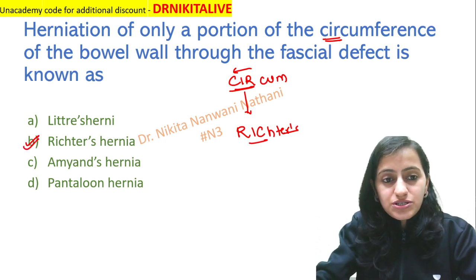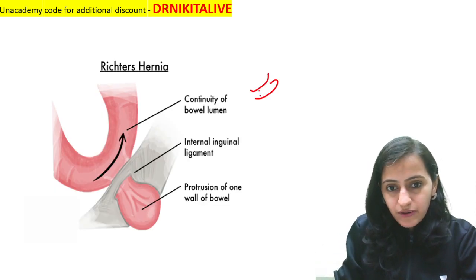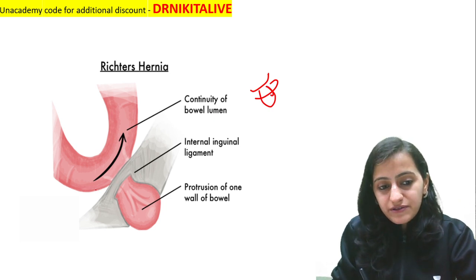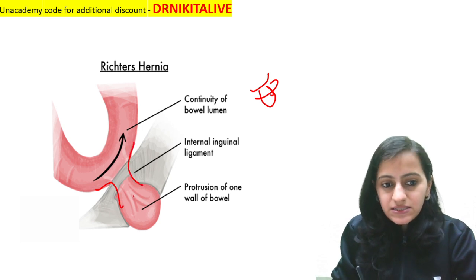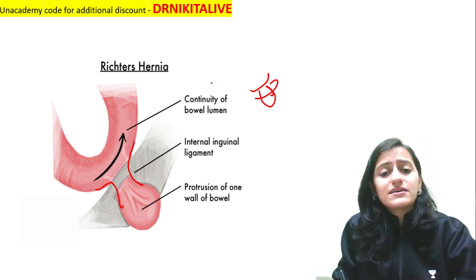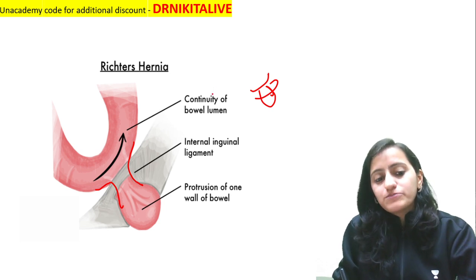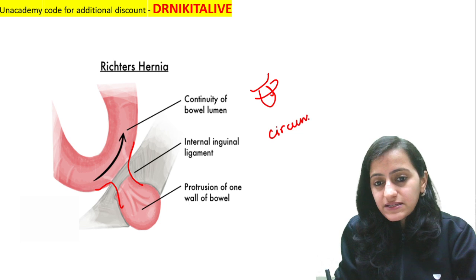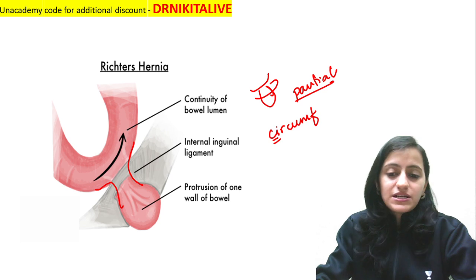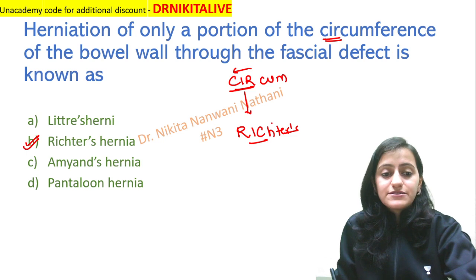What exactly is Richter's hernia? It is not the entire bowel that has gone through the defect — it's only a part of the circumference, only one part of the wall that has herniated. The bowel lumen is continued, so there are less chances of obstruction in this hernia. But yes, it can undergo strangulation, but no obstruction. So this is only a part of the circumference — basically a partial enterocele. Remember: circumference C-I-R reversed is R-I-C, that is Richter's.